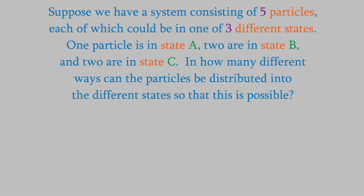Suppose we have a system consisting of five particles, each of which could be in one of three different states. One particle is in state A, and two particles are in each of states B and C. In how many different ways could we arrange the system so that this is possible?